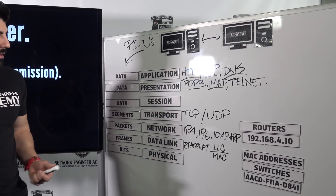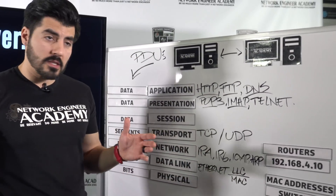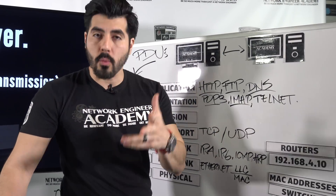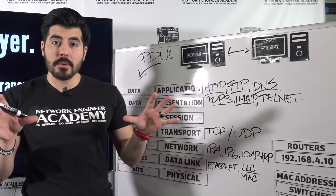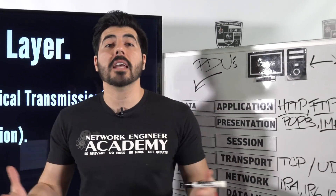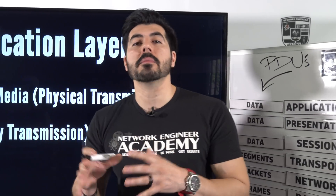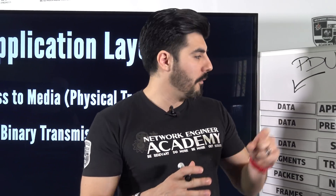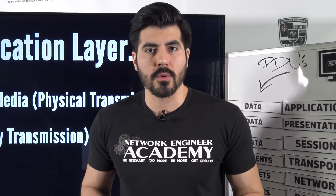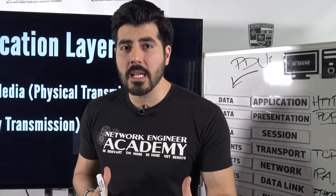For the physical layer, bits travel from point A to point B through electrical signals, light, or radio waves. I hope this video was under 10 minutes and provided a lot of value. Remember to share it, like it, and leave comments. I'll be posting individual videos for each OSI layer, so stay tuned. Go out there and make things happen!